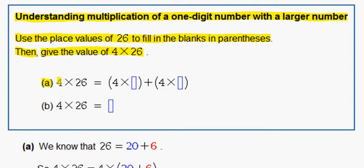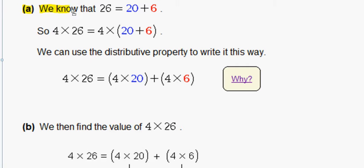So in A we have 4 times 26 is equal to 4 times blank plus 4 times blank. In A we know that 26 is equal to 20 plus 6. So 4 times 26 is equal to 4 times 20 plus 6.